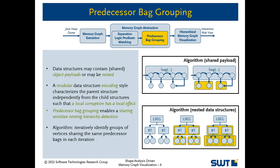While a modular encoding of data structures is preferred over a holistic encoding to ensure that a local corruption has a local effect, this leads to a single abstract vertex for the parent structure and one abstract vertex for each child structure. To provide an additional level of abstraction, we propose predecessor bag grouping, which serves as a sharing-sensitive nesting hierarchy detection. We iteratively identify groups of vertices that share the same bag of predecessors, i.e. vertices pointing to them.